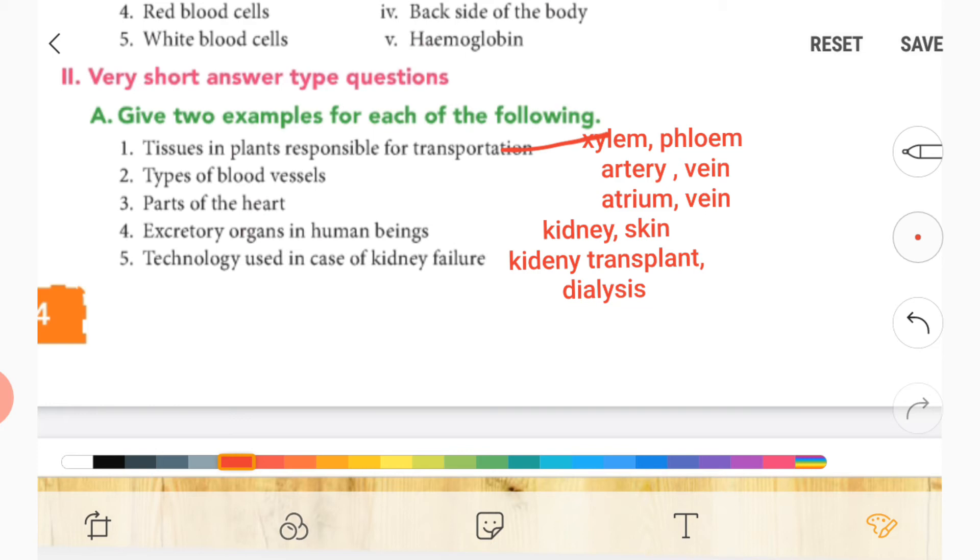Second, types of blood vessels—it is artery and vein.